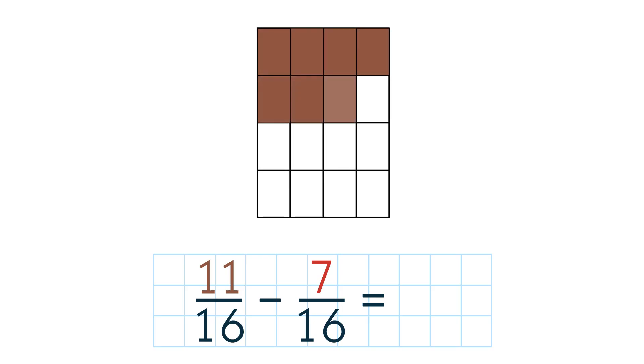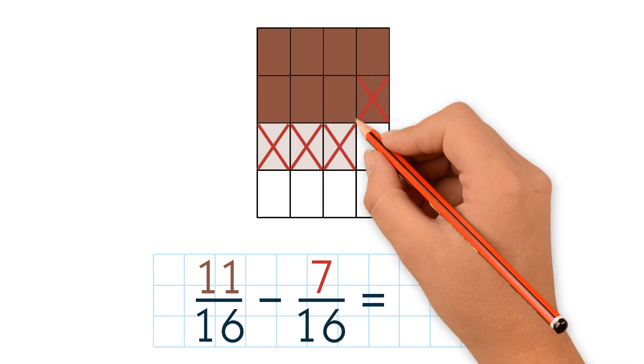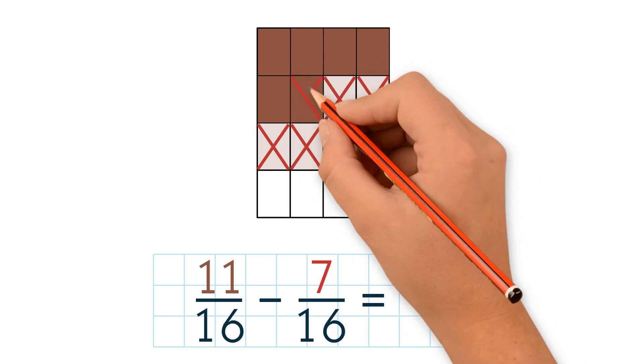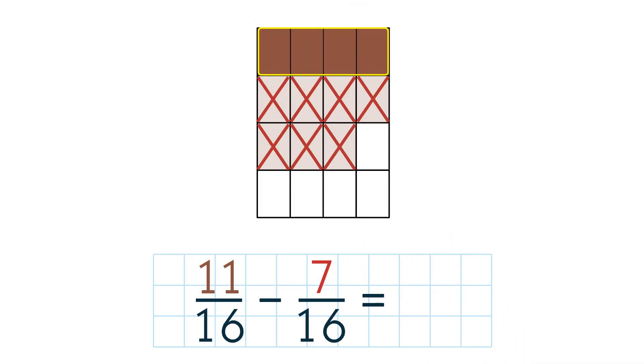We shade in 11 out of the 16 chocolate bar pieces. Then we cross out 7 pieces. Count how many shaded pieces are left over. We have 4 pieces, so the answer is 4 sixteenths.